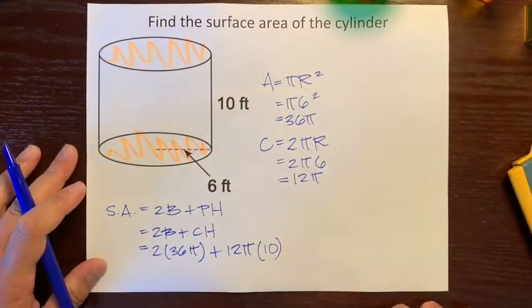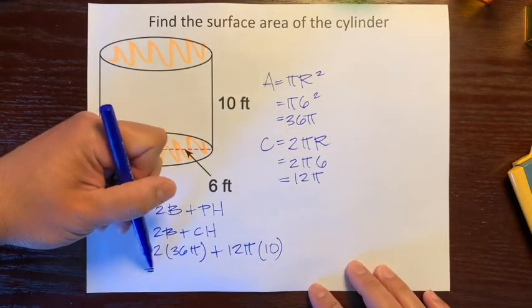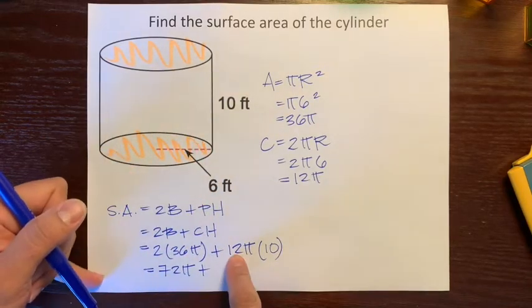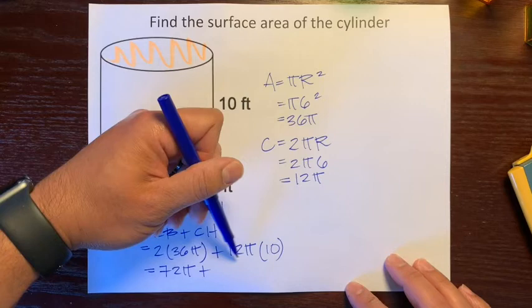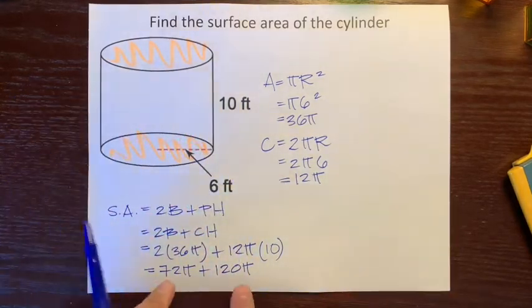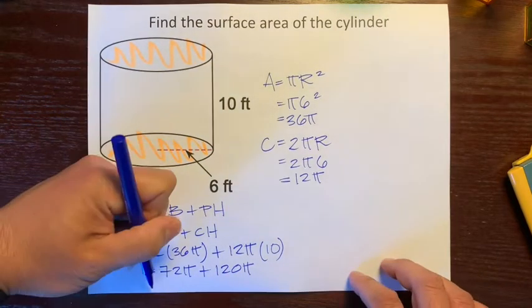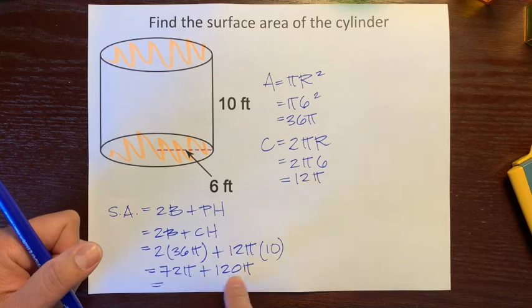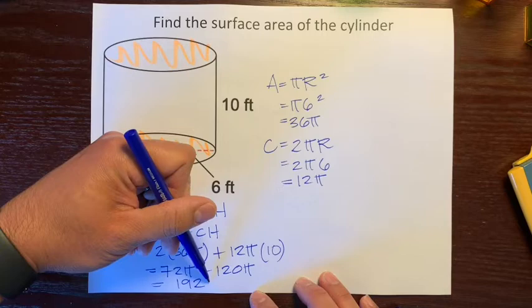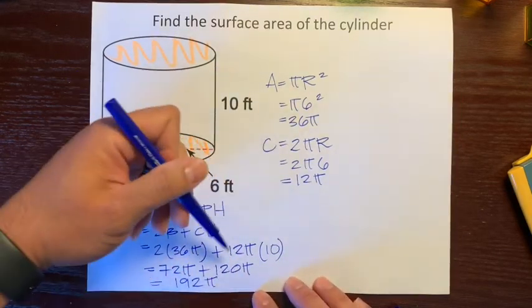Now all we need to do is just start multiplying. 2 times 36 is 72 pi plus 12 times 10 is 120 pi. Both of these have pis in it, so we can combine these like terms. 72 pi plus 120 pi is 192 pis.